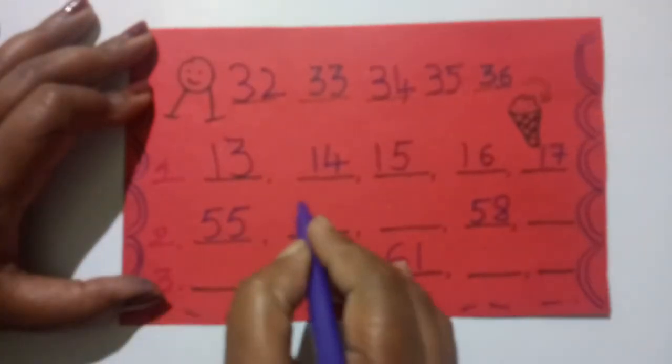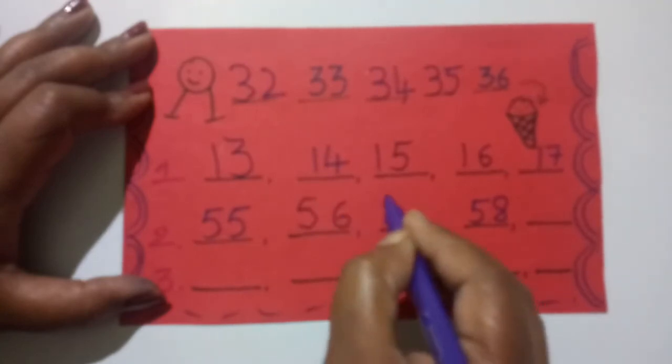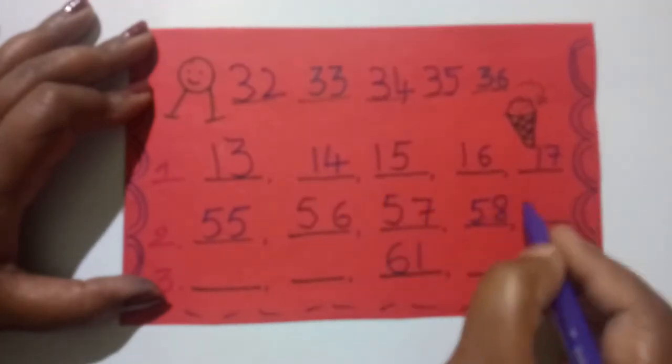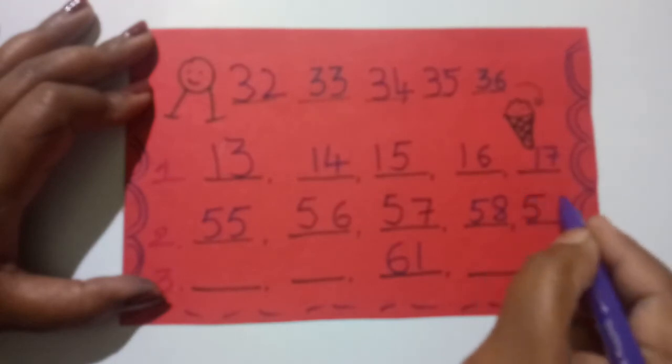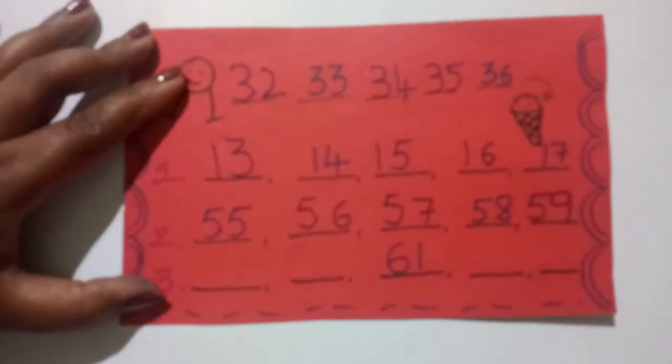55, 56, 57, 58 is written. Let us write 59. Done? Okay.